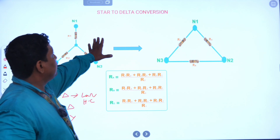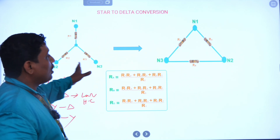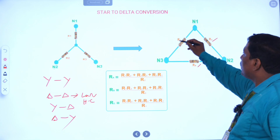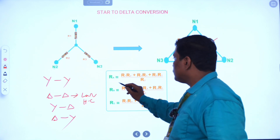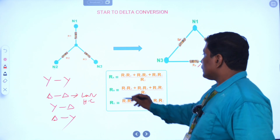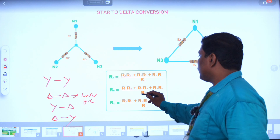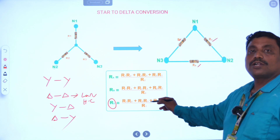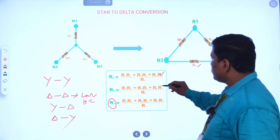Here is how to convert star to delta. The known parameter is star and the unknown parameter is delta. To transfer to delta, we can use this formula. The equivalent delta resistance is identified based on the known star resistance. That is: R1 into R2 plus R2 into R3 plus R3 into R1, divided by R2. The numerator is the same in all cases; only the denominator changes.